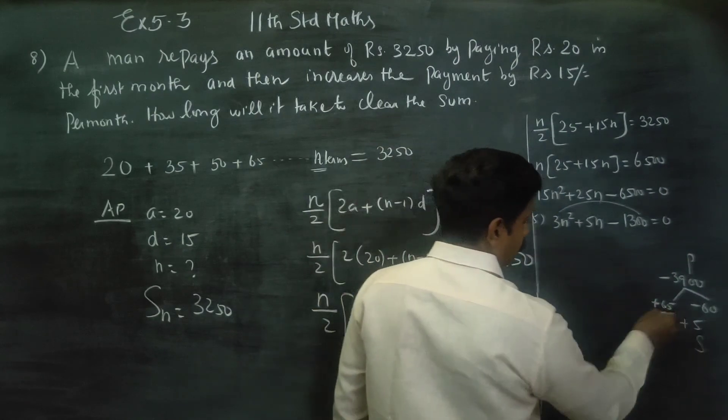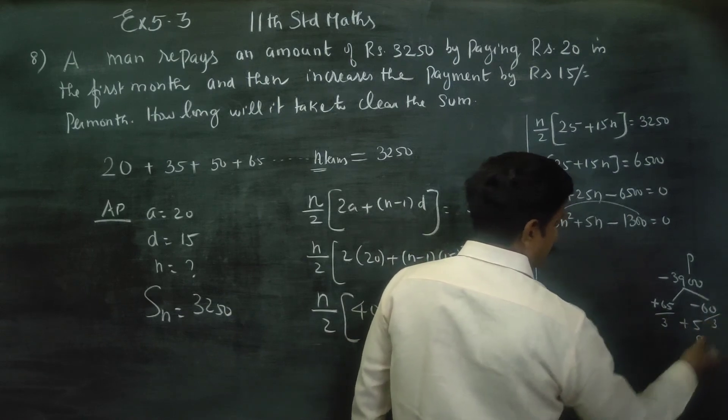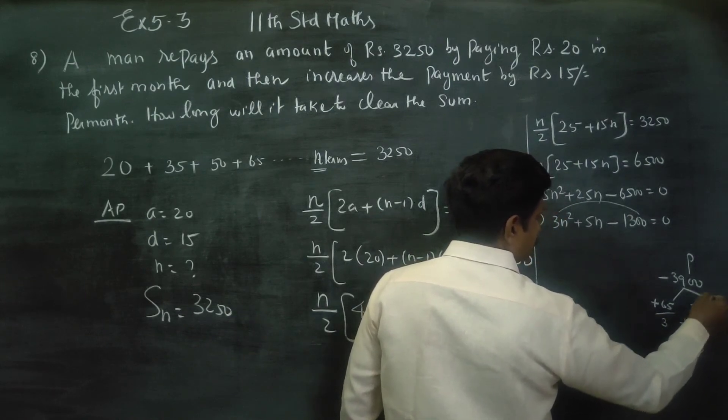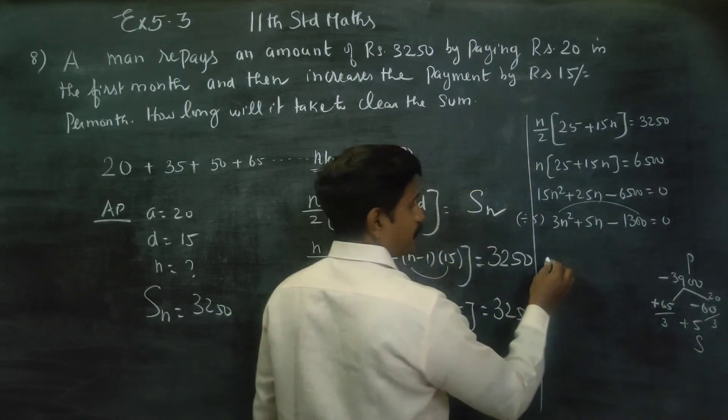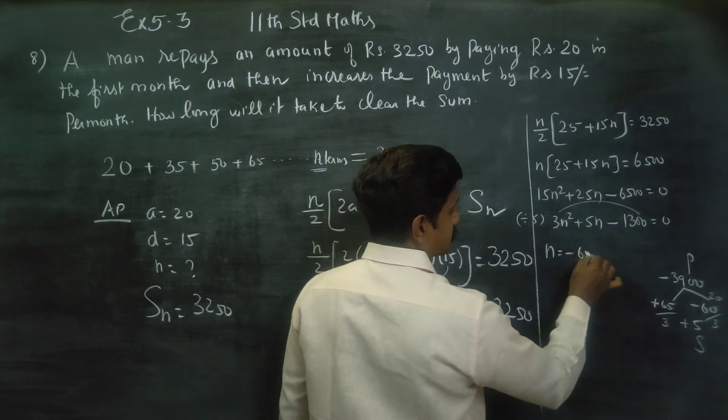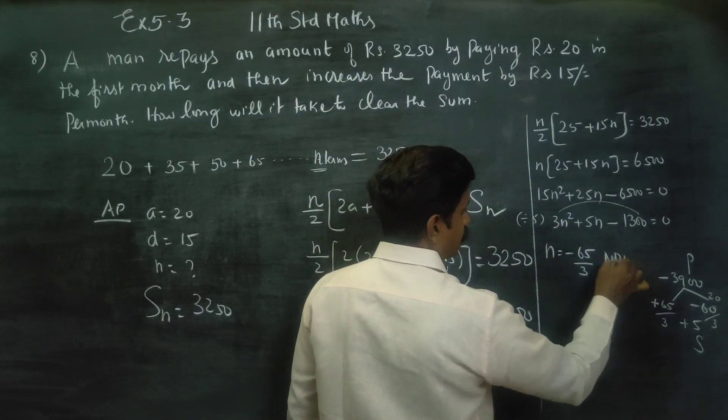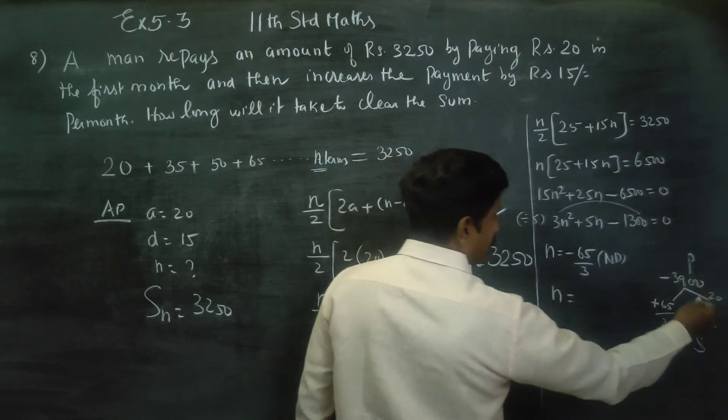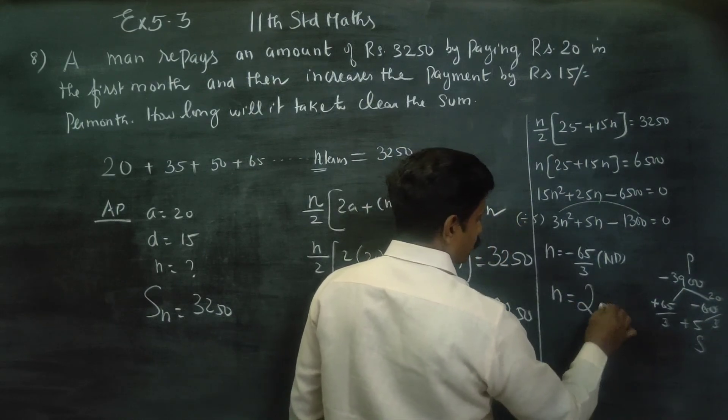If you factor and divide by 3, you get 20. The other value is minus 65 by 3, which is not possible. So n equals 20.